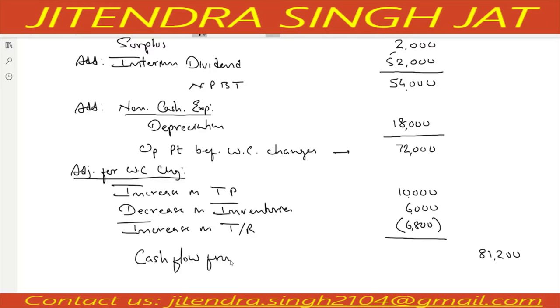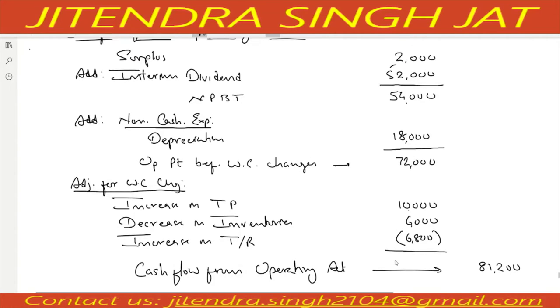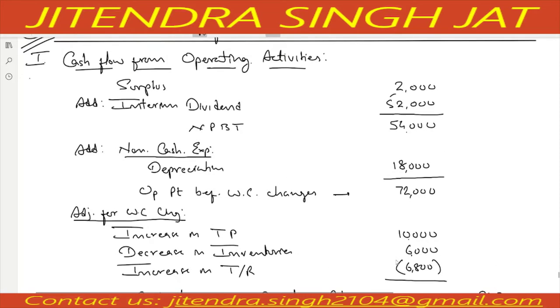Total: 72,000 plus 10,000 = 82,000, plus 6,000 minus 6,800 = 81,200 positive. So cash flow from operating activities is 81,200. I hope this first activity is clear.